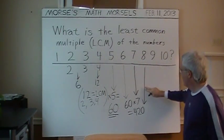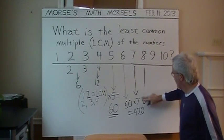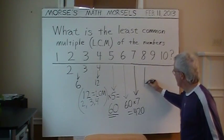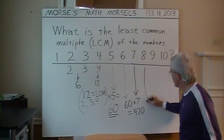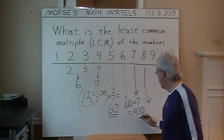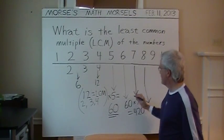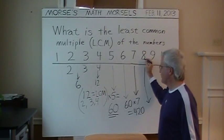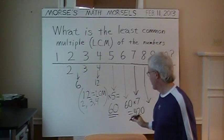And how about 8? I'm going to fix this arrow here and go out to the right a bit more. Can we divide 420 by 8 evenly? Nope. 420 is a multiple of 4 but not of 8.